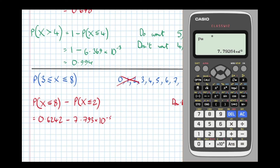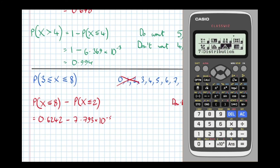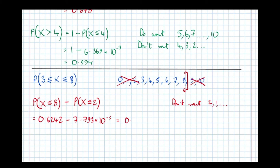Now in ordinary calculation mode — mode 1 — press alpha then the letter A, take away alpha then B. That gives us 0.624 to 3 significant figures.